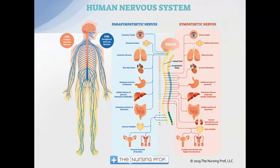It's important to understand what a beta blocker does by understanding the sympathetic nervous system. We have two different parts of our nervous system that balance each other out, having some sympathetic and some parasympathetic activity. Going through the pupils, salivary glands, airways, heart, etc., you'll notice there is an opposite effect with each. With the parasympathetic system we get constriction to the airways; sympathetic gives us relaxation. On the heart, the sympathetic nervous system will increase heart rate, while the parasympathetic system will slow it.